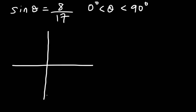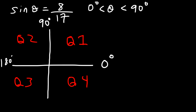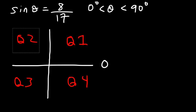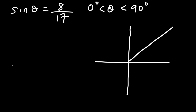Let's draw the x-axis and y-axis. This is quadrant 1, quadrant 2, quadrant 3, and quadrant 4. Angles are measured from the positive x-axis: 0°, 90°, 180°, 270°, and 360°. Since theta is between 0° and 90°, we have a right triangle in quadrant 1.